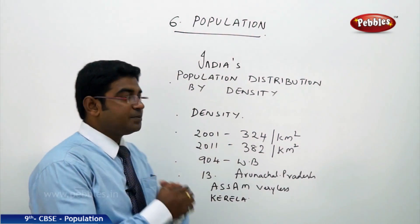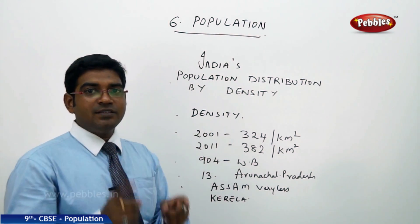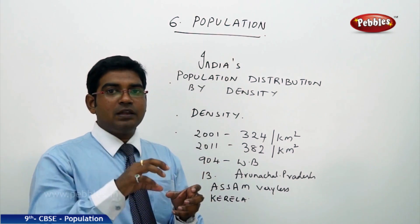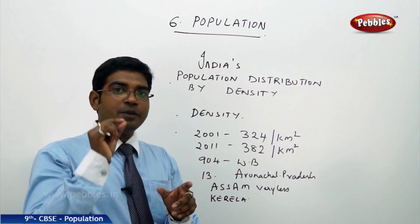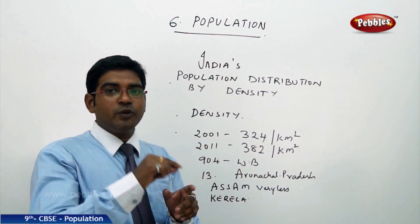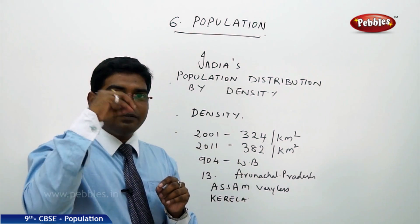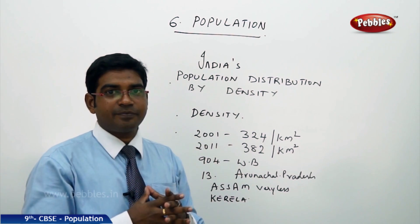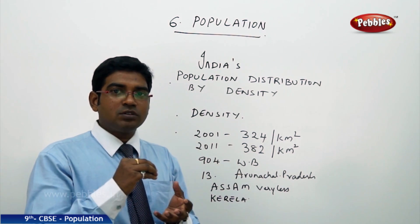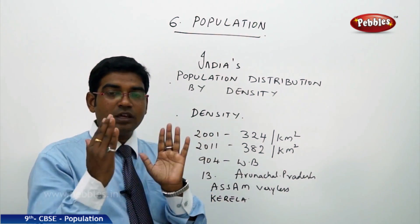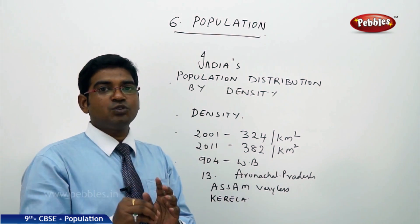Now, understanding India's population distribution by density. What is density? Density is the number of people living per unit area — for example, how many people live in one square kilometer of area. The number of people living in that particular area is known as density.